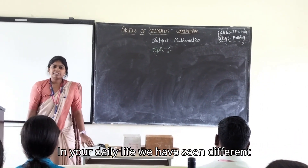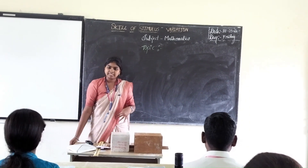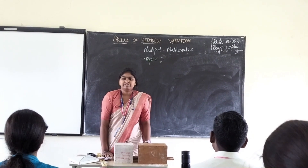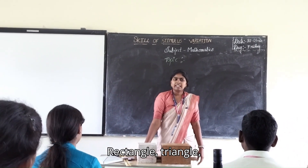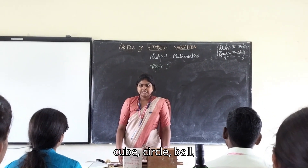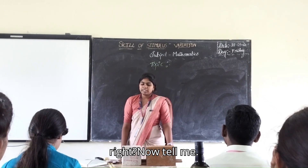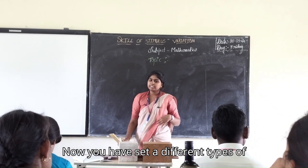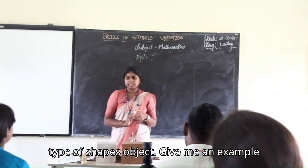In your daily life, we have seen different types of shapes, right? Can you name me the different types of shapes? Rectangle. Triangle. Squares. Circles. Now you have said different types of shapes. Now give an example for these types of shapes.